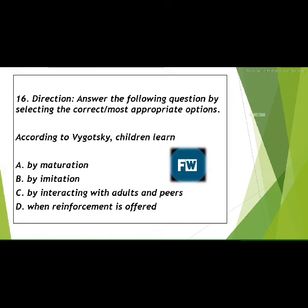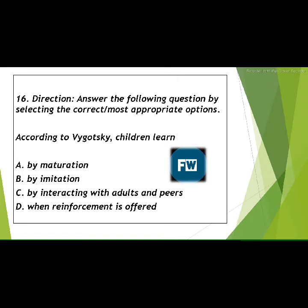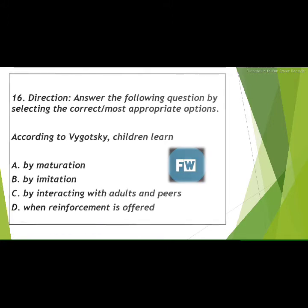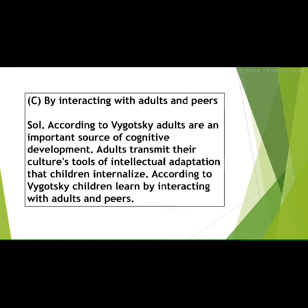Our 16th question is: according to Vygotsky, children learn — options are: A) by maturation, B) by imitation, C) by interacting with adults and peers, D) when reinforcement is offered. Think about the answer for 3 seconds. The answer is option C: by interacting with adults and peers.